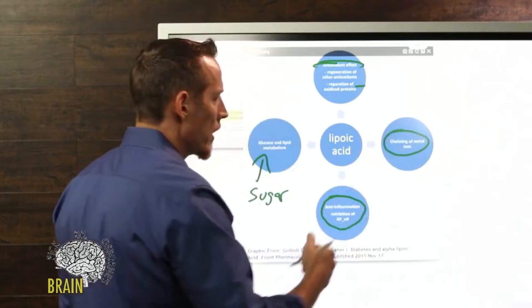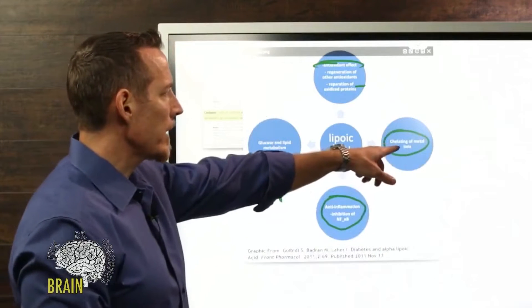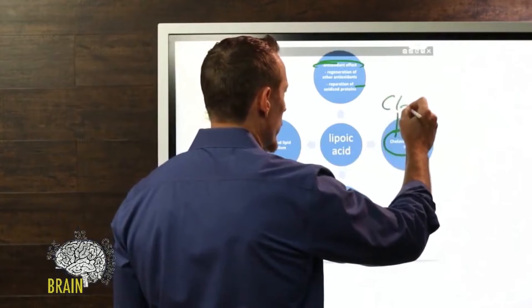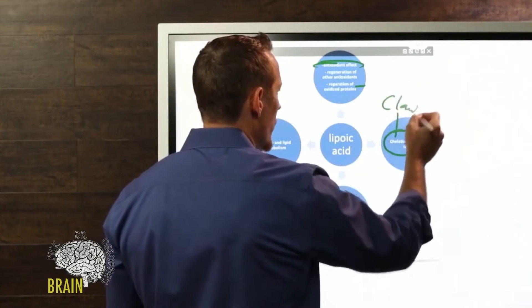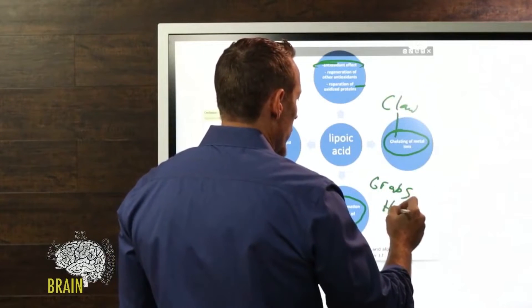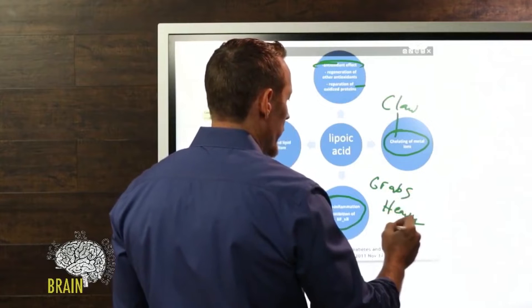The last main function is the chelating of metal ions. Chelation means Greek chelate is claw - it grabs heavy metal and helps to pull it.